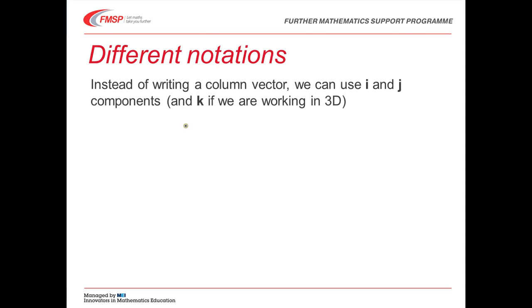Instead of writing a column vector, we can use i and j components, and k as well if we're in 3D. i is just a unit vector in the x direction. It's sometimes written with a little hat over it to show that it's a unit vector. j is a unit vector in the y direction. The little hat emphasizes that it's a unit vector, but this notation seems to be a bit old hat. I like it as it emphasizes the fact that they're unit vectors. You'll come across it in A2 further pure, but not with i and j. So, the vector we had on the previous slide, 3, 2, we could say, well that's three units in the i direction, and two units in the j direction. You must remember to underline your vectors when you're writing them with handwriting.